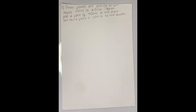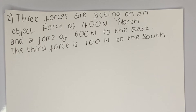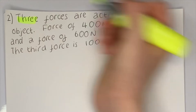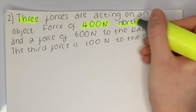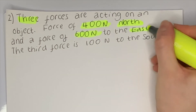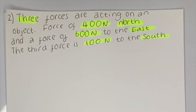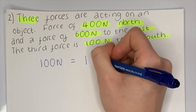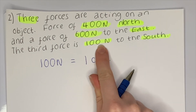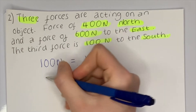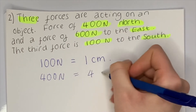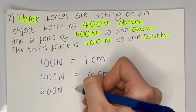Now a slightly different question — question two. Three forces are acting on an object: a force of 400 newtons to the north, a force of 600 newtons to the east, and a third force of 100 newtons to the south. Remember, highlight the important things first. We have three forces: 400 N north, 600 N east, and 100 N south. Now we define a scale — I'm going to say 100 newtons equals one centimetre, so 100 N is 1 cm, 400 N is 4 cm, and 600 N is 6 cm.